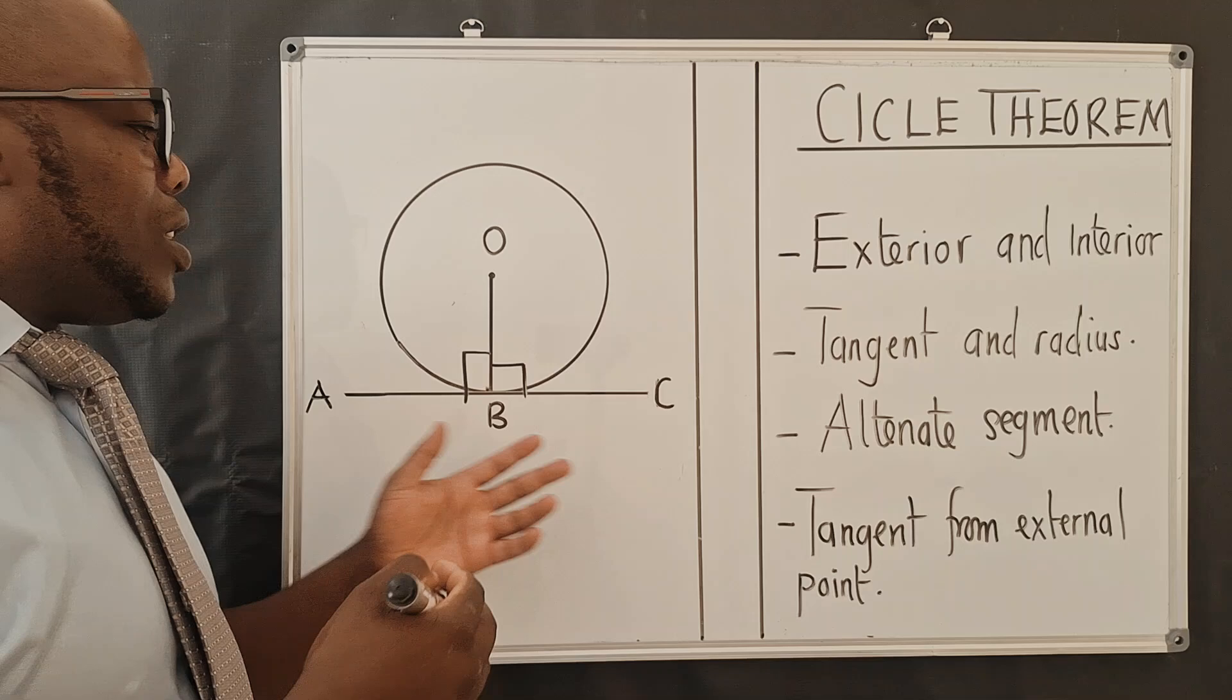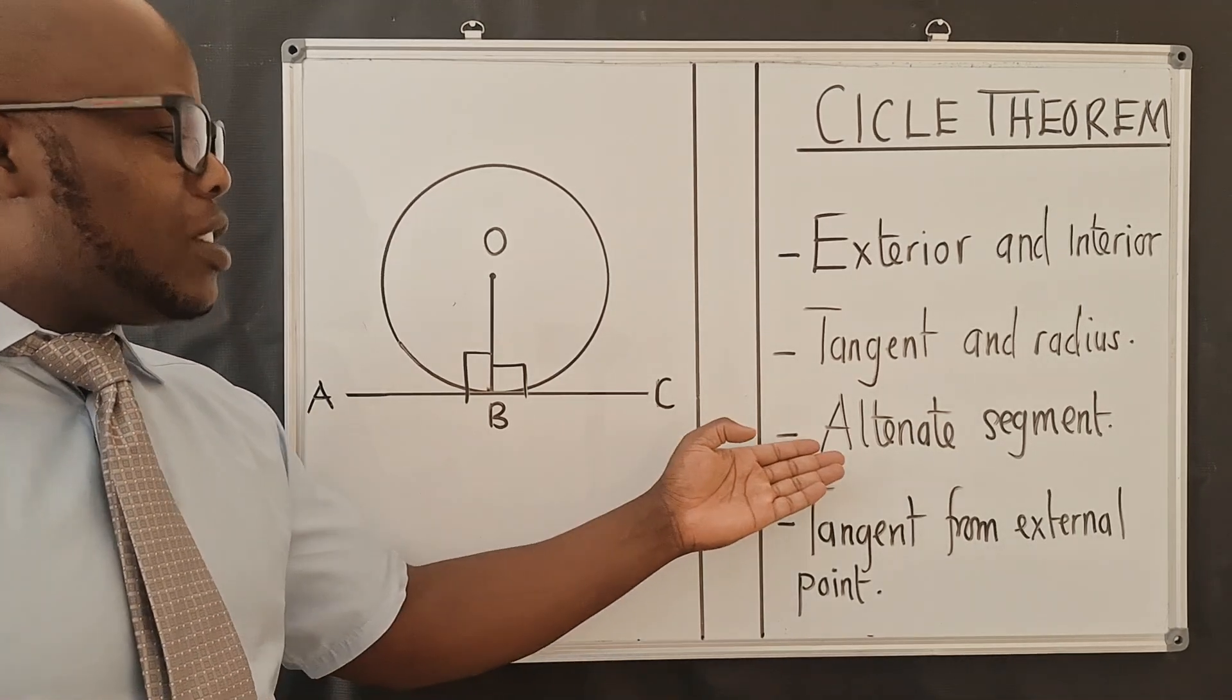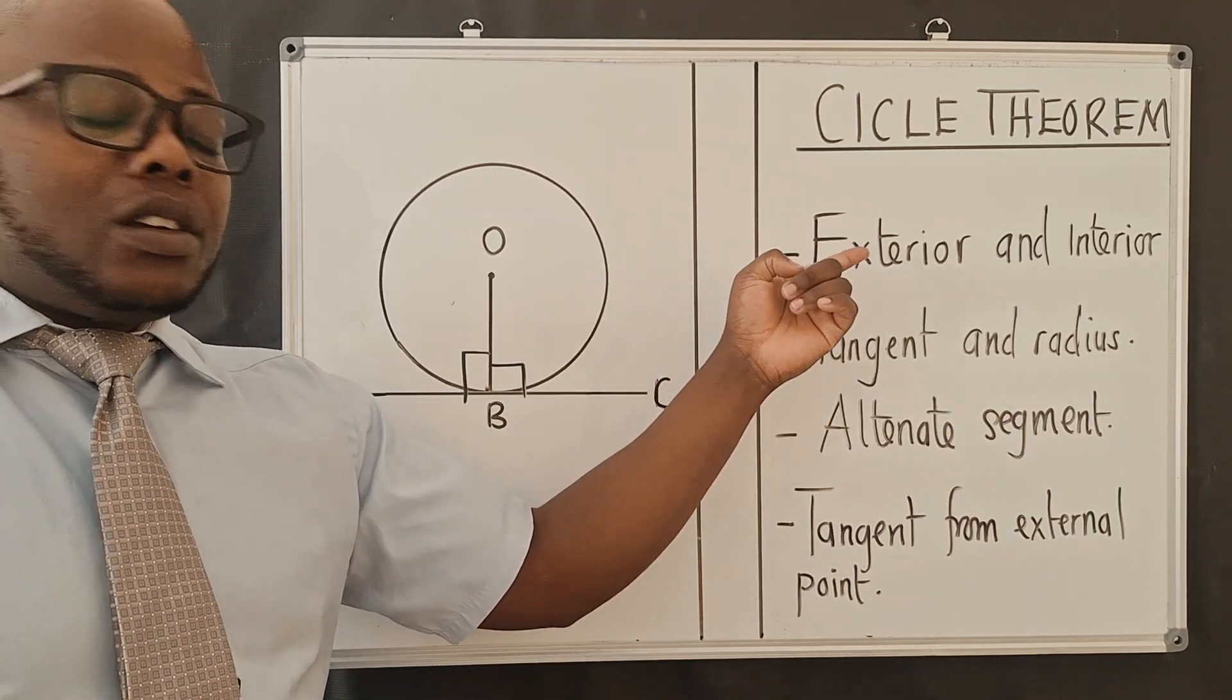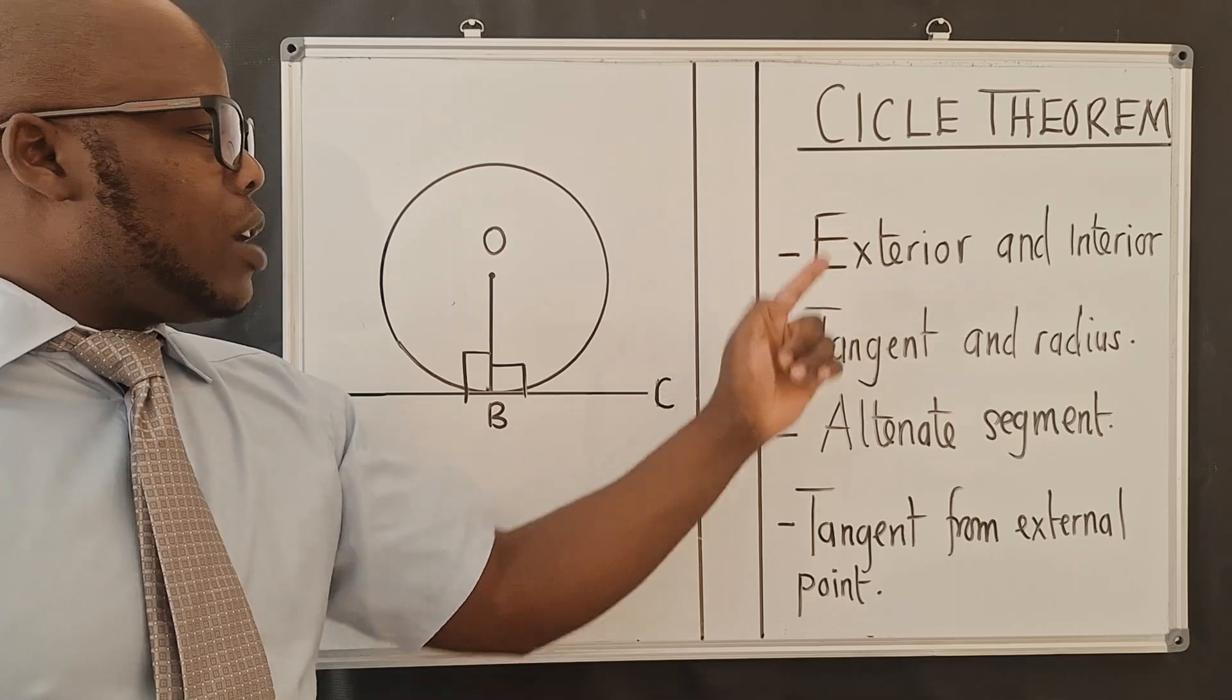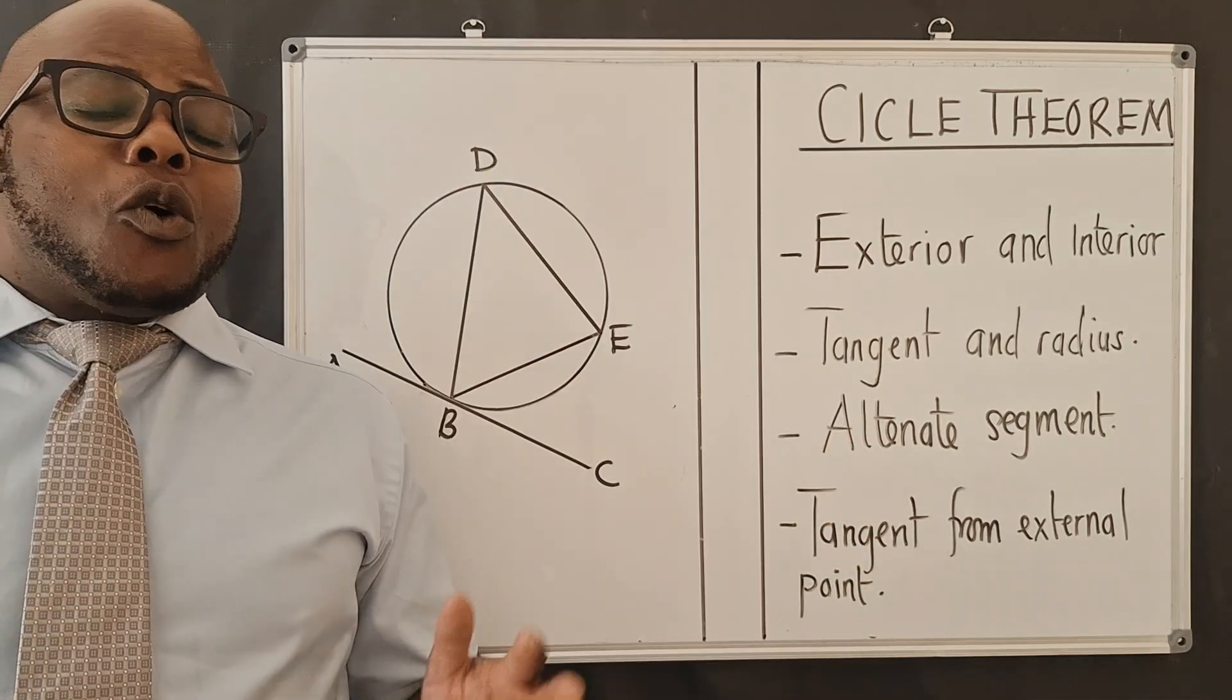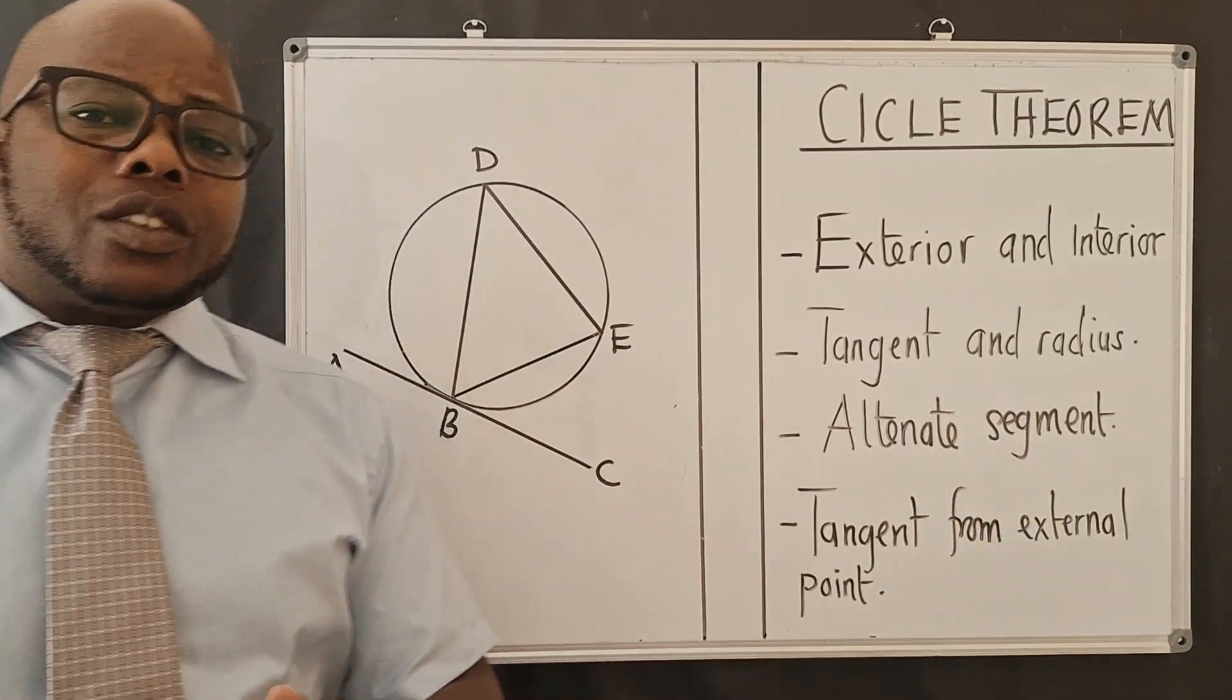So let's go to the next property. Actually, this must be property number 7 here. This is number 6, this is number 5. So we did 4, this is 5, 6, and then we go to property number 7. So for alternate segment, you can see this is the property. What it says...